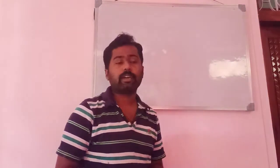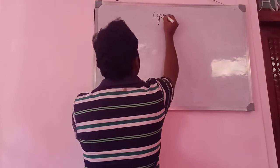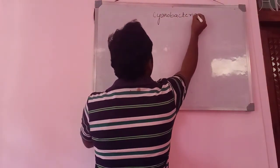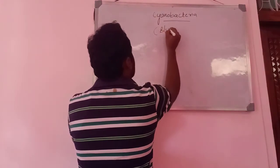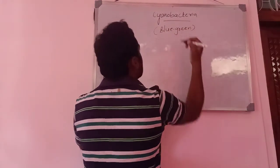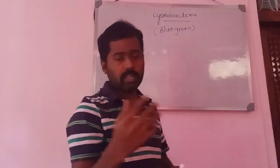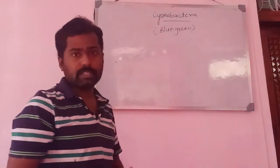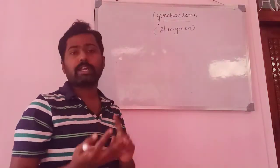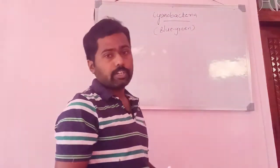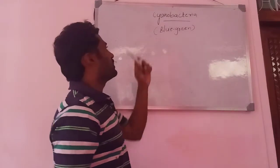In this video I am going to explain about the next members of the Kingdom Monera — that is blue-green algae or cyanobacteria. These organisms belong to the class Myxophyceae or Cyanophyceae. The Kingdom Monera is divided into three divisions: Schizophyta, Cyanophyta, and Protophyta. Schizophyta includes Archebacteria and Eubacteria. Under division Cyanophyta, the only class is Cyanophyceae or Myxophyceae, which includes cyanobacteria or blue-green algae.